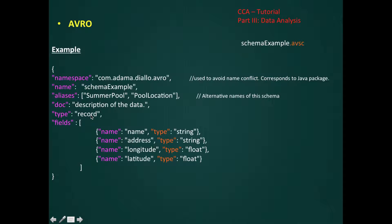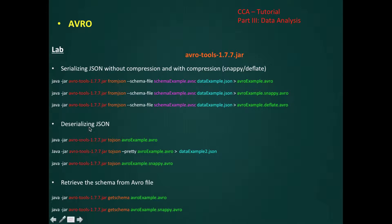We will explain later the data types that Avro supports. In our case, we have four fields from our previous data: the name of type string, address of type string, longitude of type float, and latitude of type float. This schema is stored in a file with the extension .avsc for Avro schema.